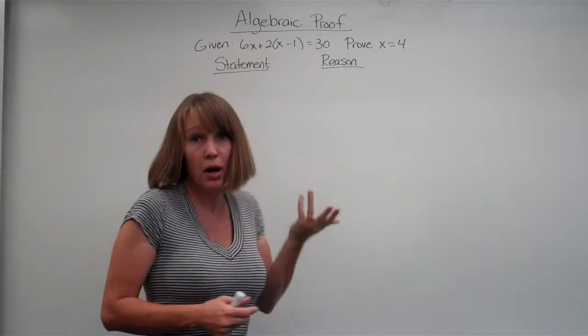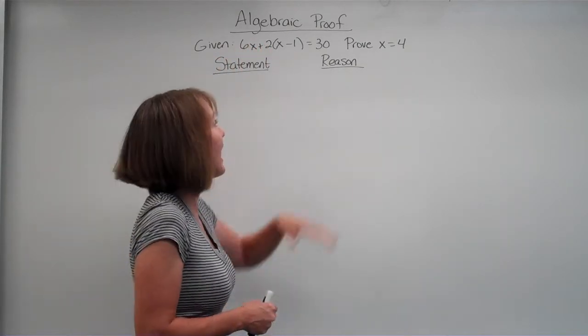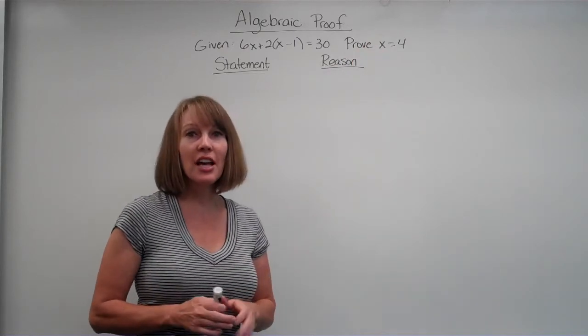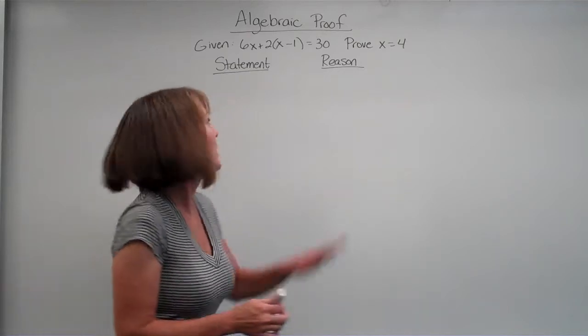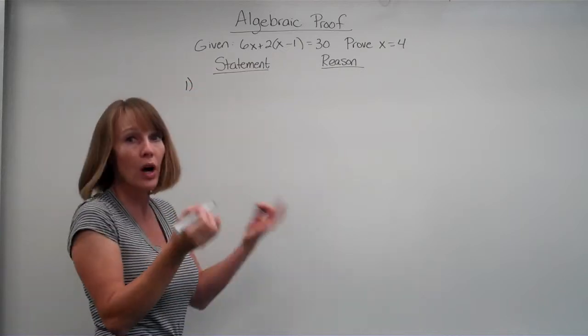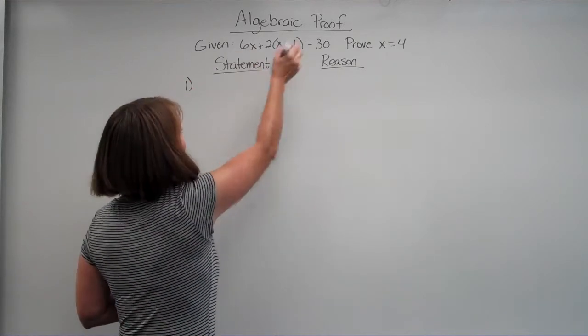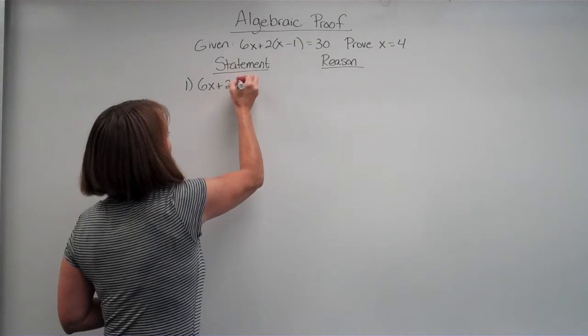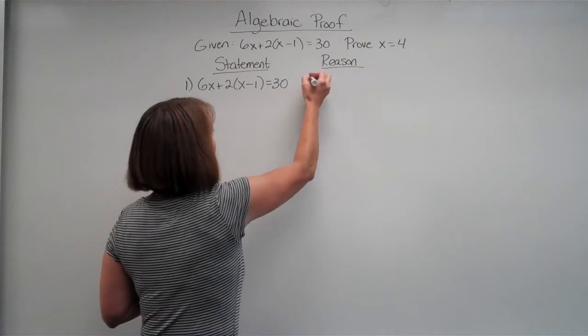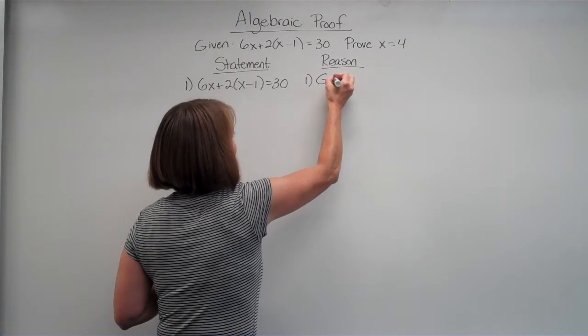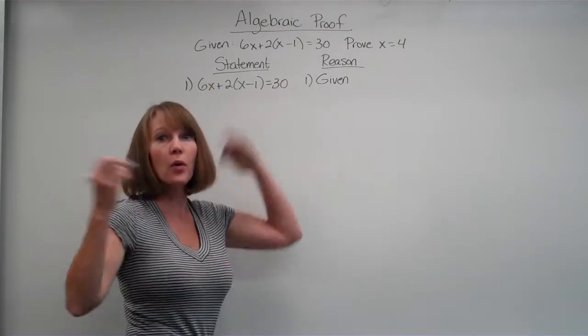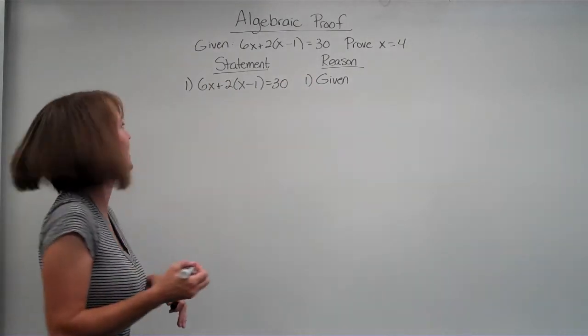So here's how it works. You're going to be given a statement, an algebraic problem, and you're going to be asked to prove that the answer is what it says. Now, the wonderful thing about proofs is that you always have the first line. The first line is a statement: what is your question? What were you given to start with? And here it is. I was given 6x plus 2 parentheses x minus 1 equals 30. Why did I write this down? Well, because it was given to me. The first line is always what you've been given, your question, and the answer is always because it was given.